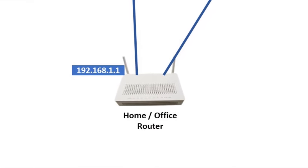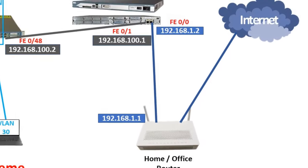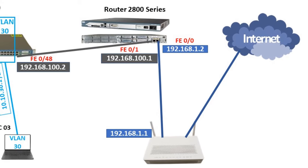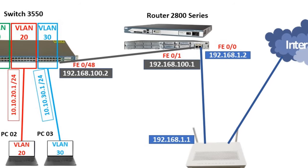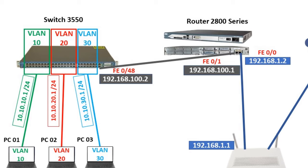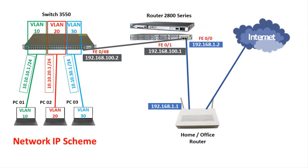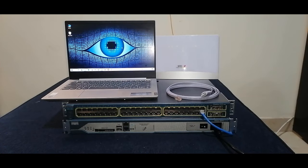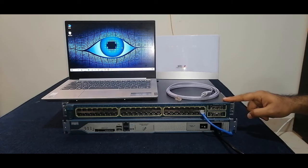This is the IP network scheme I'm going to use in this video tutorial. My ISP router has IP address 192.168.1.1. I'm going to assign 192.168.1.2 to the Fast Ethernet 0/0 port on my router, which is in the same subnet. For Fast Ethernet 0/1, I'll use a completely different network — 192.168.100.1 on the router side and 192.168.100.2 on the switch's Fast Ethernet 0/48 port. I will also create three IP pools for VLAN 10, VLAN 20, and VLAN 30 in the switch, so end devices get IP addresses automatically from those subnets.